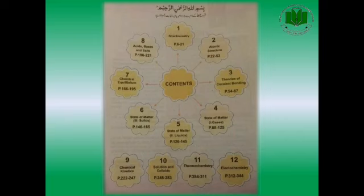In this slide, the contents of your textbook have been shown, and these contents are actually the syllabus outlines as well. In first year, you deal with a total of 12 chapters. The first chapter is named Stoichiometry, the second is Atomic Structure, the third is Theories of Covalent Bonding. The next three chapters are on States of Matter — Chapter 4 is on gases,